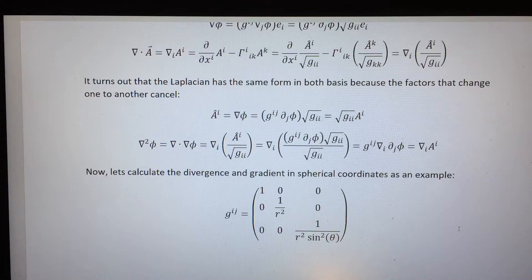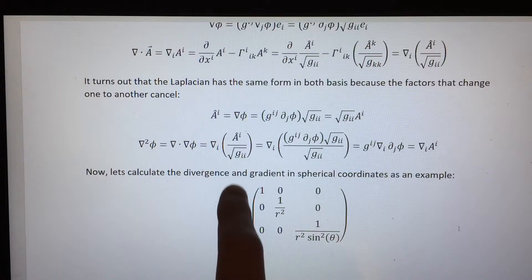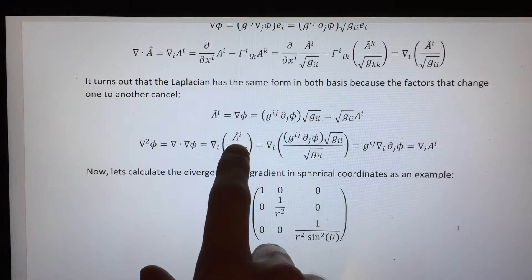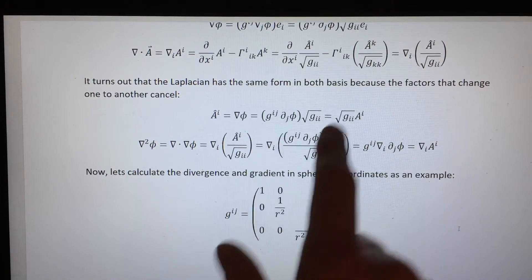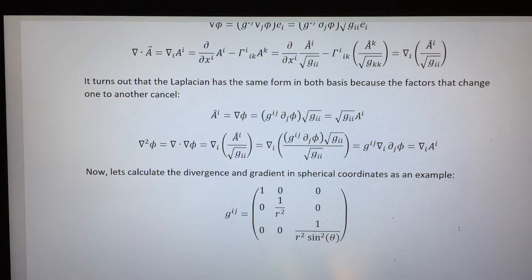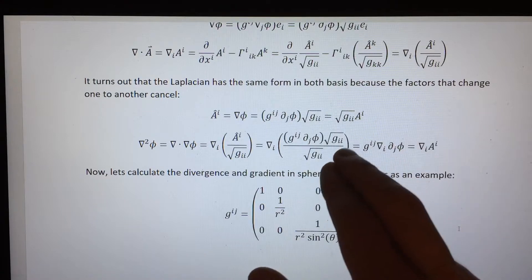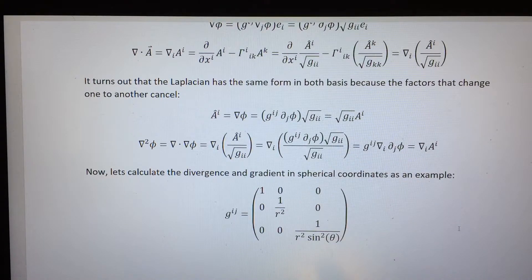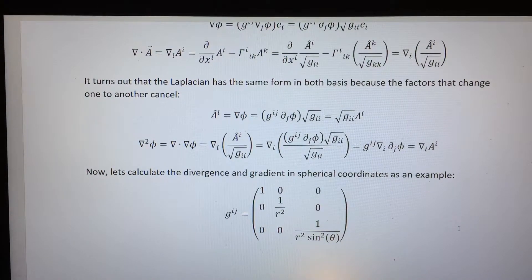You can see this by taking the divergence expressed in the orthonormal basis and inserting the orthonormal components of the vector as the orthonormal gradient components. You stick them in and they cancel, and you see we just get the Laplacian we would have gotten had we not changed into the orthonormal basis in the first place — because the contributions from the change to the orthonormal basis just cancel out.